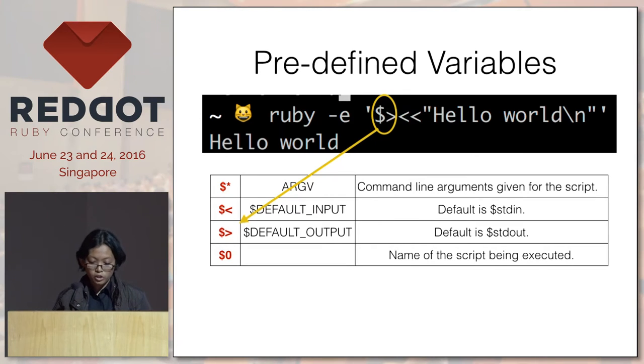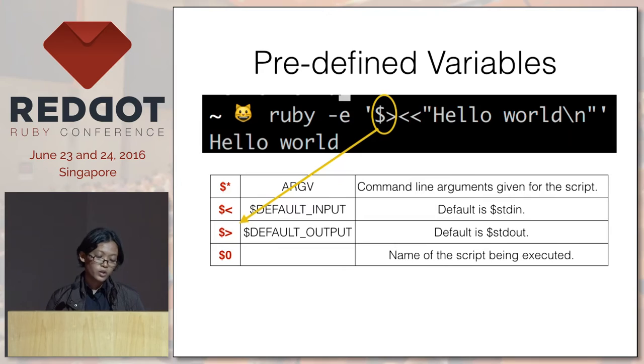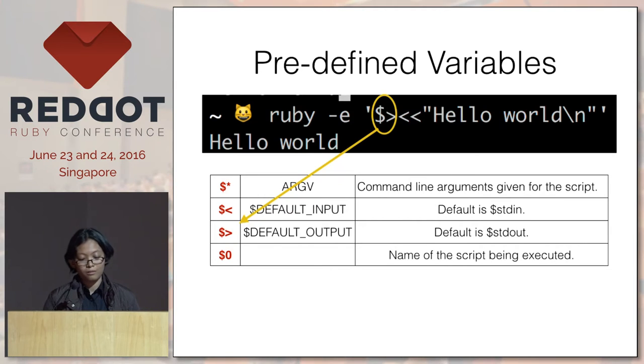Another example: dollar-greater-than is an alternative for the default output, which is stdout. So if you push some string into it, it would print hello world, for example.